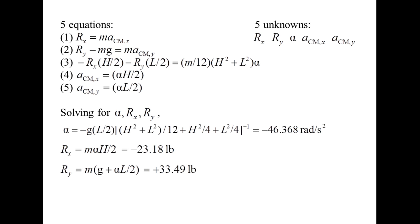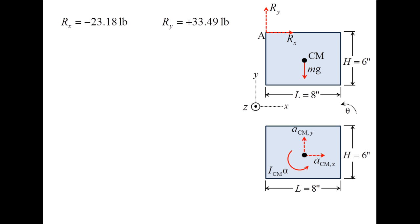Rx is approximately 23.2 pounds to the left, and Ry is approximately 33.5 pounds upward. Now that we know the components of the reaction force vector, we can obtain the direction and magnitude of the reaction force. The inverse tangent of Ry divided by Rx gives two possible orientations of R, negative 55.3 degrees or positive 124.7 degrees. The negative value for Rx and the positive value for Ry means that the pin exerts a force on the plate directed toward the left and upward. So the correct answer is 124.7 degrees. The magnitude of the reaction force is 40.7 pounds.